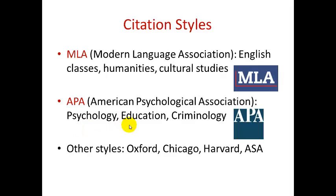But there are also lots of other styles of citing sources: the Oxford style, the Chicago style, the Harvard style, the ASA style. If you have any questions about what style you should be using, your best policy is to ask your professor. The important thing to know is that no matter what style you use, you have to use some standardized format for explaining where the information that you're using in your paper came from.